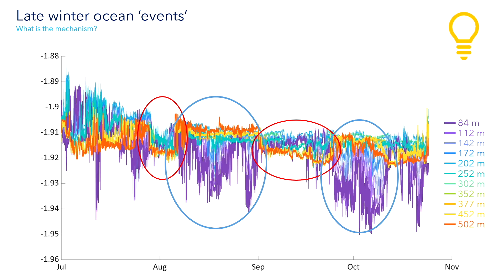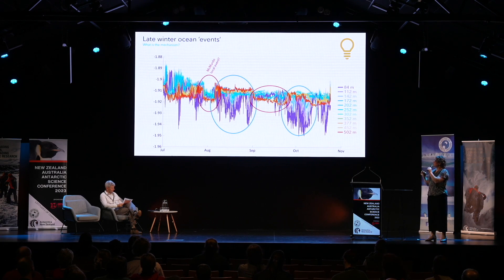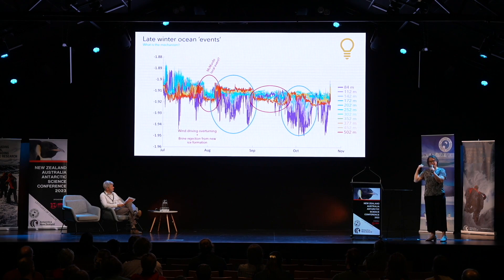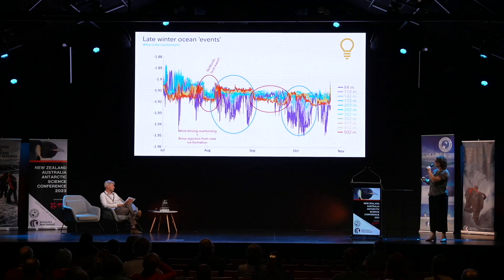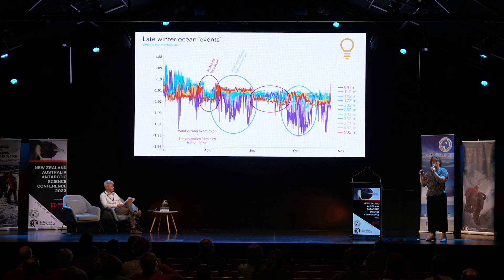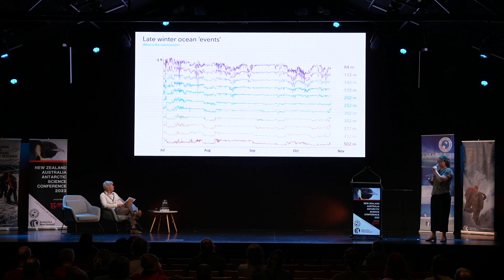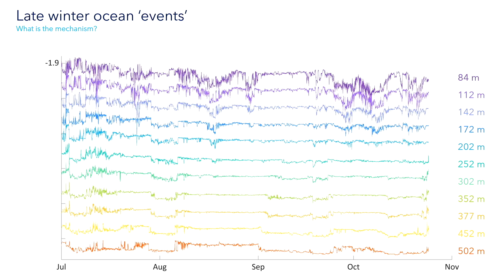I put my thinking cap on and tried to explain this. The hypothesis I came up with was that this is a local event potentially driven by a strong wind event that could overturn the water column and also influence new ice formation right at the surface over the mooring. This is then followed by a return to the larger-scale regional signal driven by the Ross Sea. But the issue with that hypothesis is that if we separate out the different temperature records so you can see them individually, marking the start of that particular event, you can see it actually starts in the deep water. So that is not a surface-driven event.